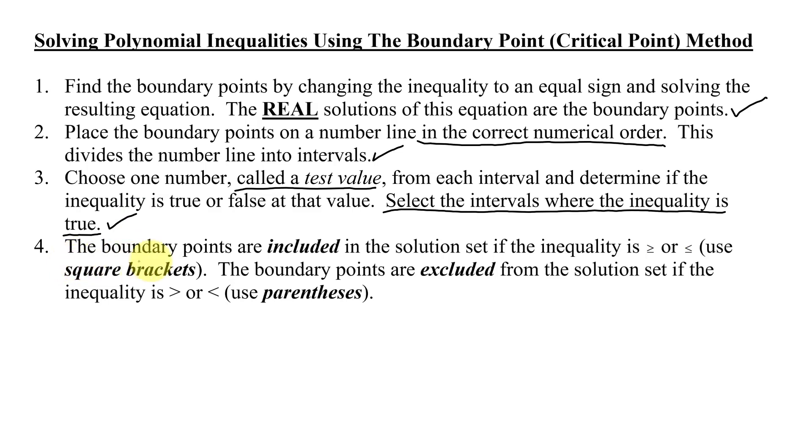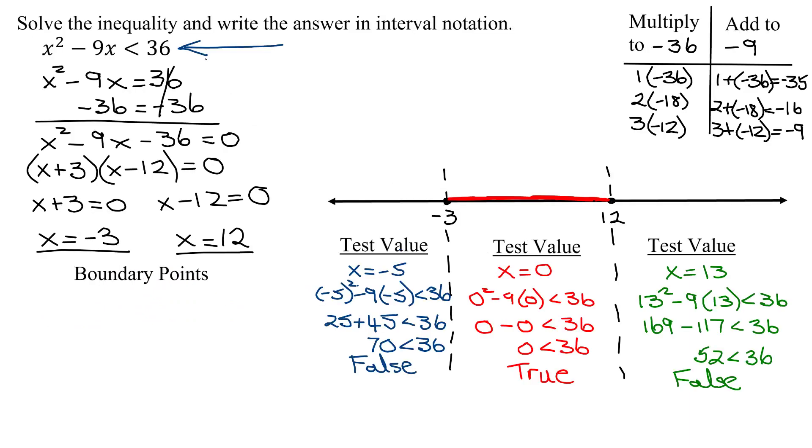And finally, step 4 says the boundary points are included in the solution set if the inequality has the equals in it, if it's greater than or equal to or less than or equal to, and then we'd use square brackets. The boundary points are excluded from the solution set if the inequality is greater than or less than, and then we'd use parentheses. So looking at our problem, it's less than. I do not include the boundary points. So I'm going to use parentheses.